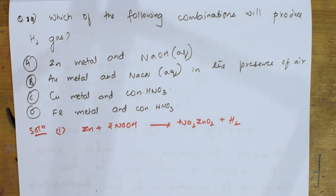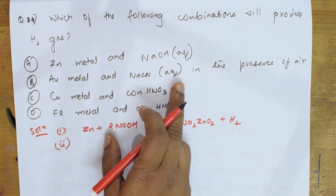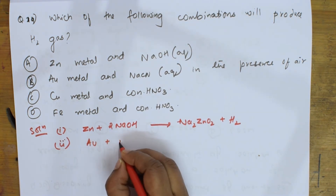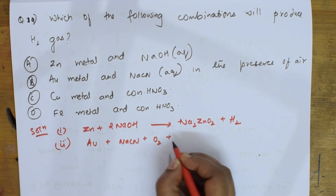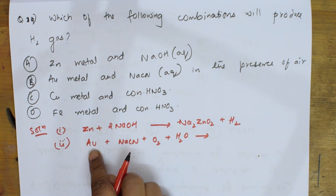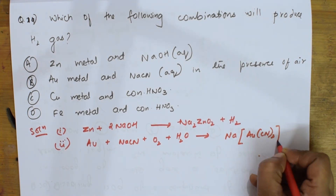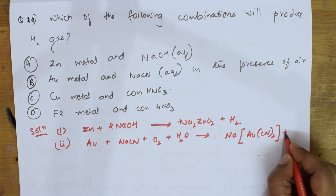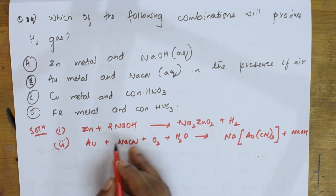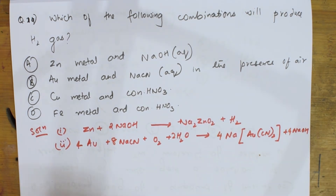Next, they said gold (Au) metal reacts with aqueous sodium cyanide in the presence of air — that is oxygen. Au plus NaCN in the presence of O₂ and water: gold combines forming a coordinate complex, giving a complex with sodium hydroxide. Balancing this, there is no hydrogen gas in this reaction.